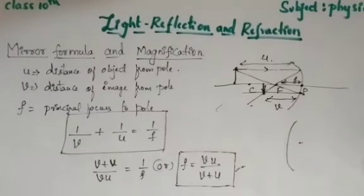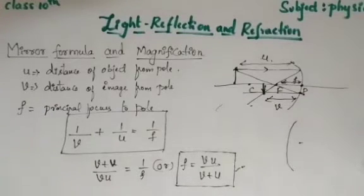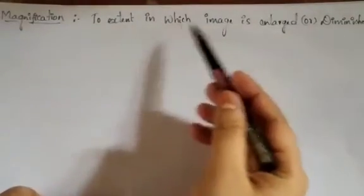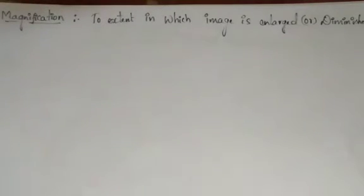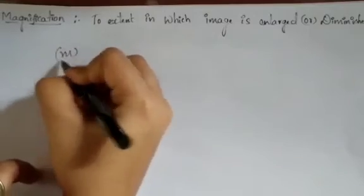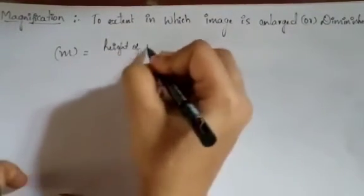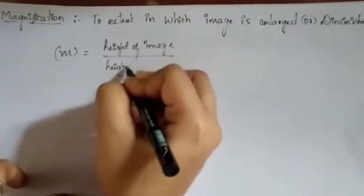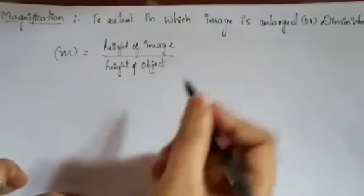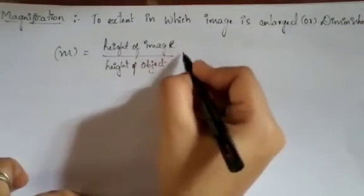Based on the mirror formula, there is another formula to find magnification. Magnification tells us how much the image is enlarged or diminished compared to the object. Magnification is defined by the small letter m, and it equals the ratio of the height of the image divided by the height of the object.